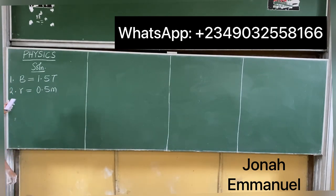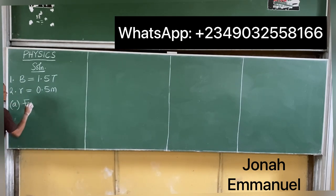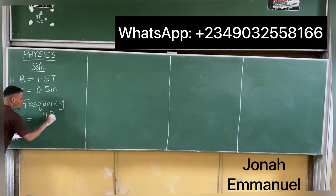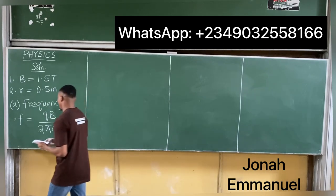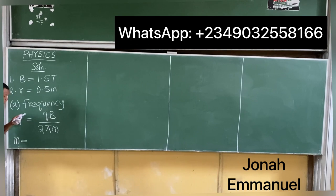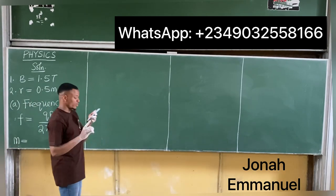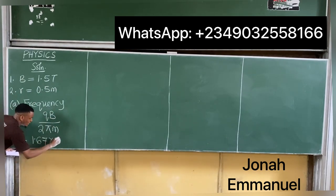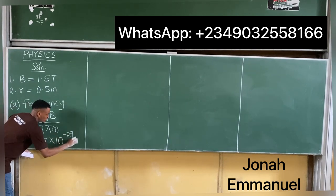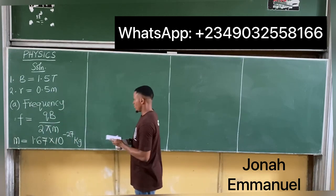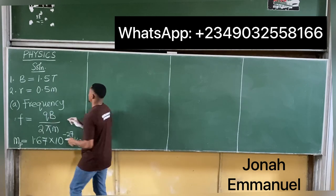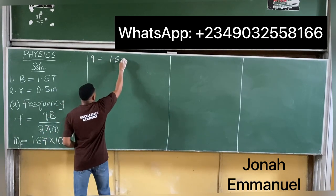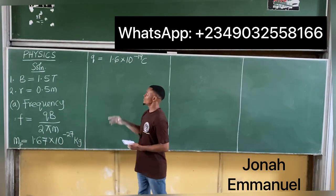For Part A, cyclotron frequency f = qB/(2πm). We are told it's a proton, so mass m = 1.67×10⁻²⁷ kg. Charge q = 1.6×10⁻¹⁹ C — we use the positive value since frequency cannot be negative. So f = (1.6×10⁻¹⁹ × 1.5) / (2π × 1.67×10⁻²⁷).